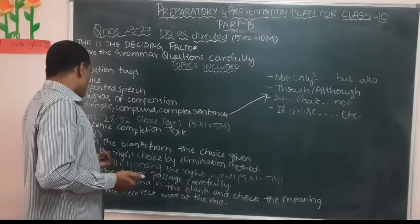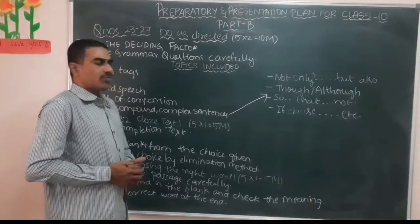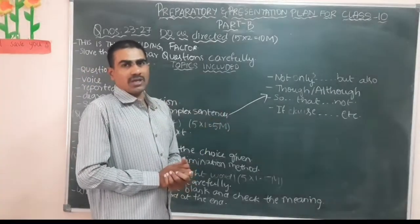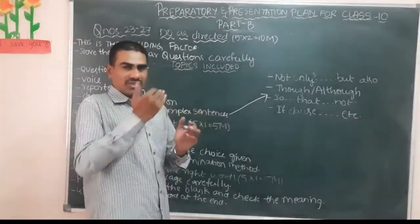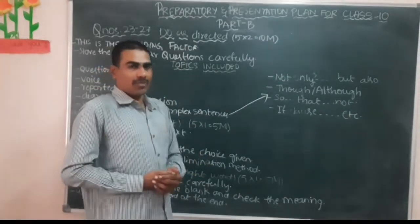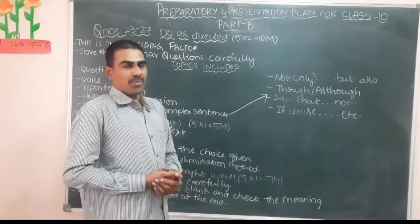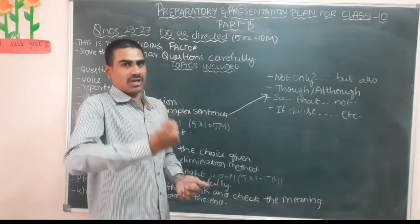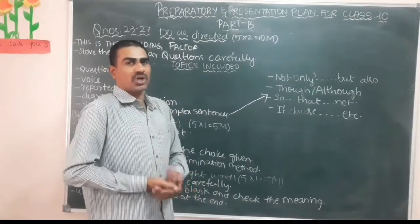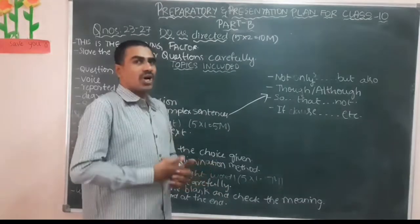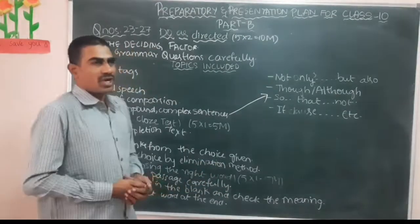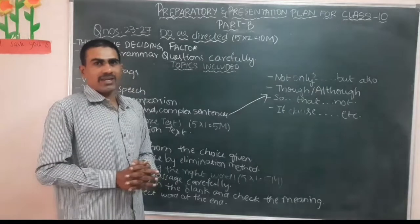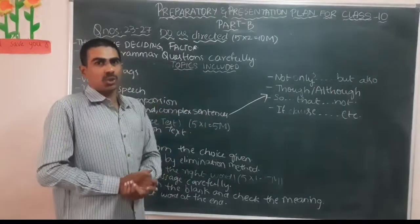Place the right choice using the elimination method. From the four choices, eliminate the words that are not related to the blank. Maybe two or three choices will be left. From those, you have to select the right word by placing each word in the particular blank and seeing which word really suits the answer.